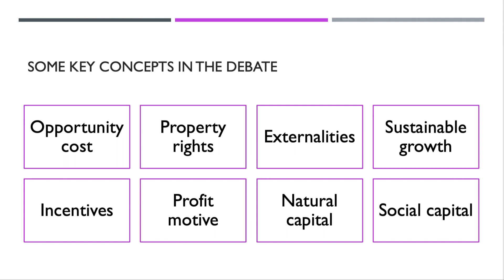There are lots of economic concepts to bring into any essay or data response question on deforestation: the opportunity cost of using land in different ways; the importance of property rights in determining who owns land and how land can be protected by the legal system; the externalities of both production and consumption arising from, for example, increased global demand for products made using soya; sustainable growth; and the role of the incentive and profit motive in shaping producers' decisions. Also important are two types of capital: natural capital — the value of land and environmental resources — and social capital, which is about the bonds between communities and how organisations and countries can make collective decisions for the betterment of a community in the long term.